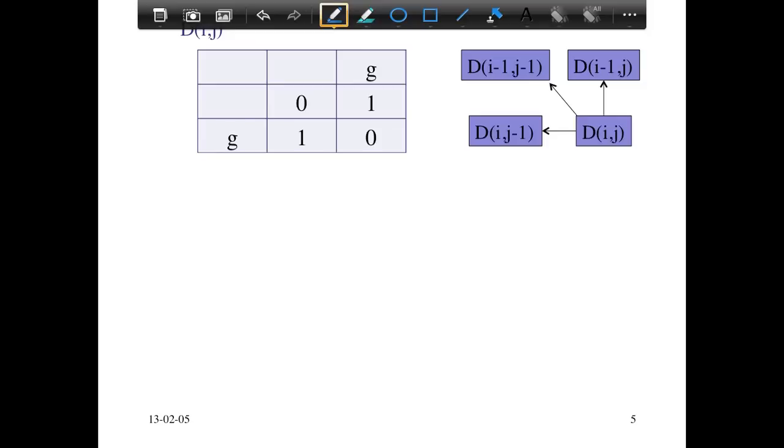But of course there is a simpler solution, which is you get a cost of zero for aligning the empty string to the empty string. That's the initialization. And you get G aligned with G for a cost of zero. So this diagonal, this path is what's the minimum cost edit distance, which is intuitive. G should align to G with no cost at all.